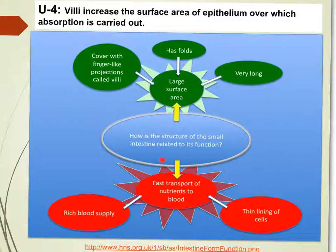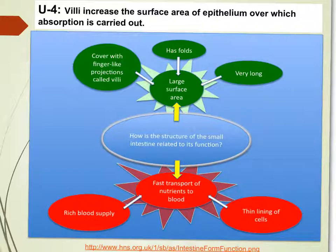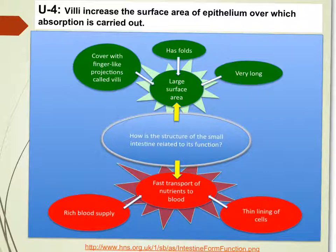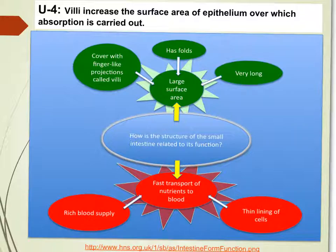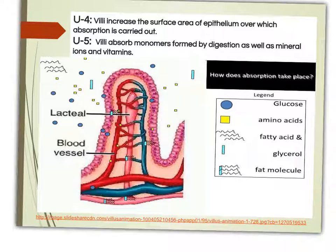The structure of the small intestine is also very important for performing its two main functions: absorption of food and providing a large surface area. Its large surface area is due to the fact that it is very long, it has folds, and it is covered by finger-like projections called villi. Transportation of digested food is very fast from the small intestine because it is supported by many blood vessels and the epithelial cell layer is very thin.